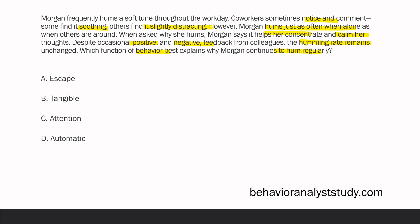Looking at the answer choices: A, escape — nothing indicates this is happening for escape. B, tangible — Morgan isn't obtaining an item. Attention would be the only other possible answer besides automatic, but despite both positive and negative feedback, it doesn't affect the humming, and Morgan does it when she's alone. So most likely this is an automatic function — a sensory reason — because it happens even when she's alone and attention has no impact on the behavior.